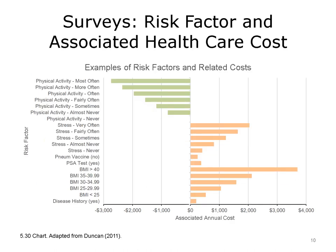This bar chart shows the positive and negative effects of various behavioral risk factors on annual health care costs. As shown, certain risk factors, such as increased levels of physical activity, are associated with lower annual health care costs, while increased levels of stress are associated with higher annual health care costs.